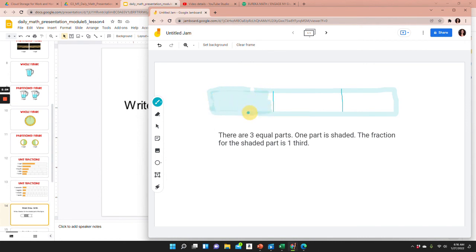So, as you can see, I drew a tape diagram for my model, I partitioned into three equal parts, and I labeled one part that is shaded as one-third. Then I wrote a complete sentence to answer the question that says there are three equal parts, one part is shaded, the fraction for the shaded part is one-third.